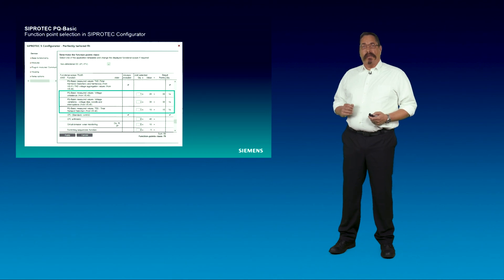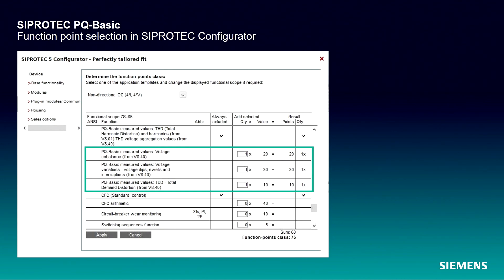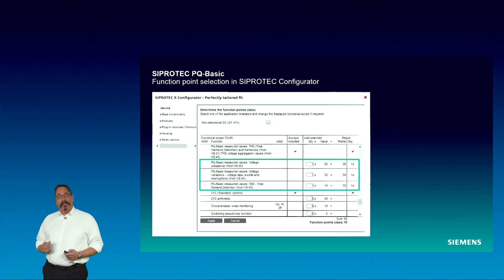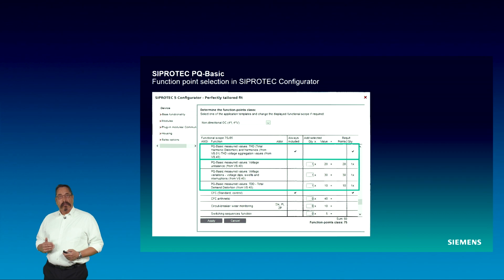Function points are selected using the SIPROTEC 5 configurator. To monitor and indicate warnings for unbalance, 20 function points are required. All events will be classified with 30 function points. For activation of the total demand distortion, a set of 10 function points needs to be available. To enhance your Dixi5 project with all PQBASIC functionalities, 60 function points are required in total, because the THD is already on board.